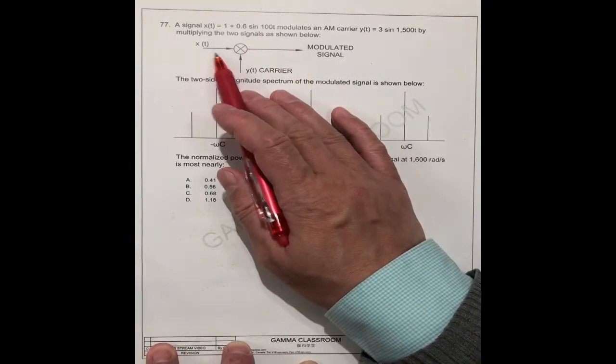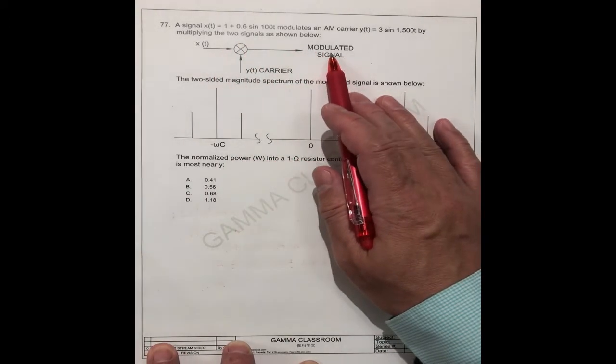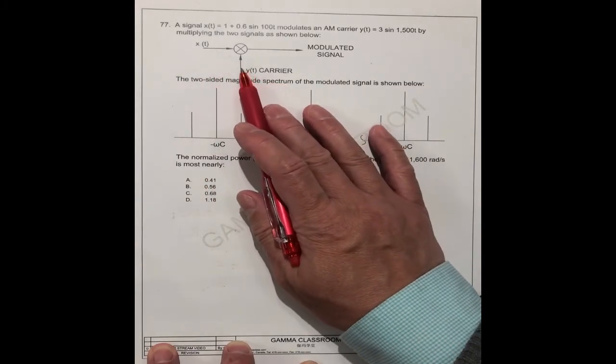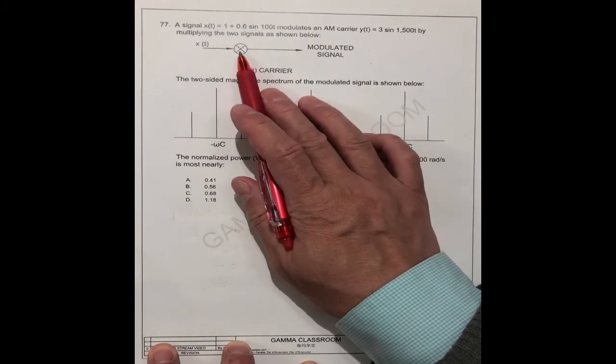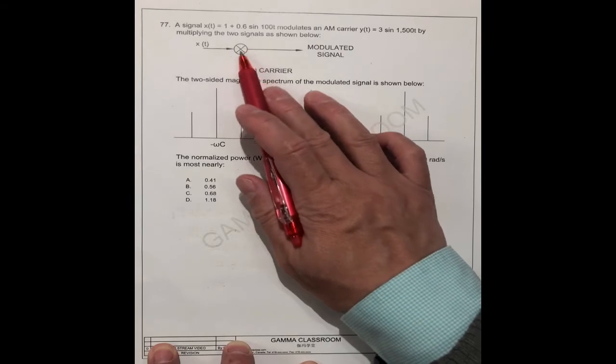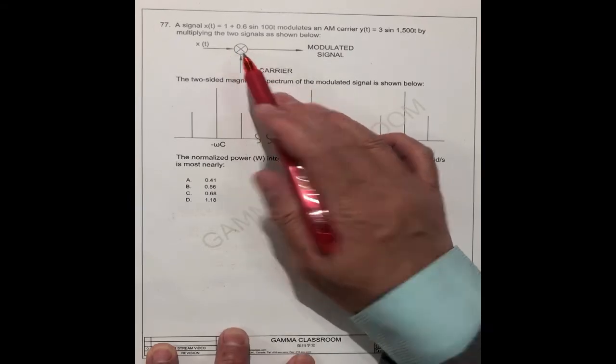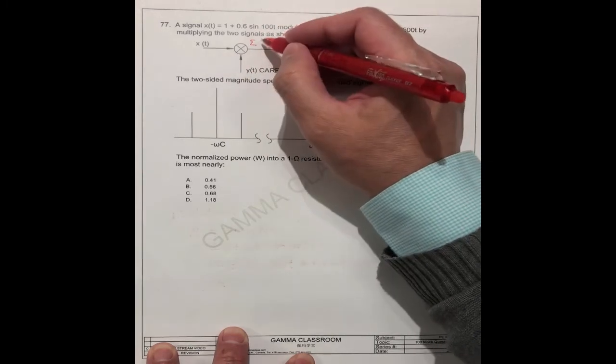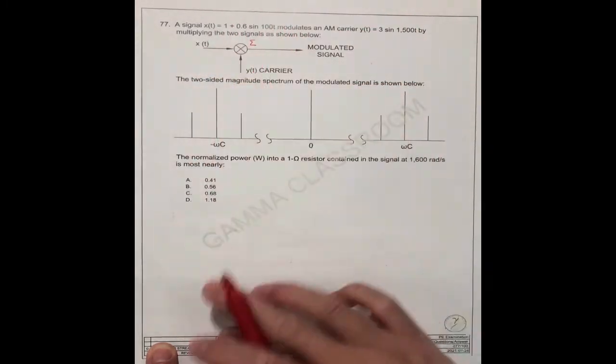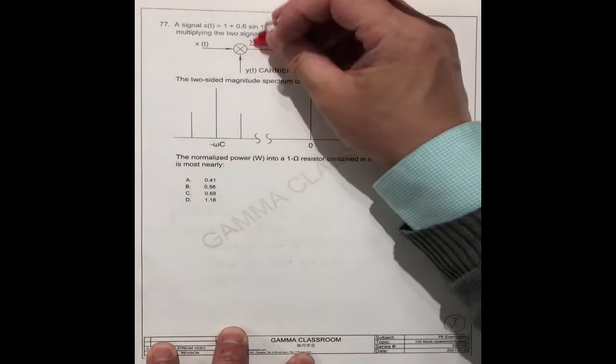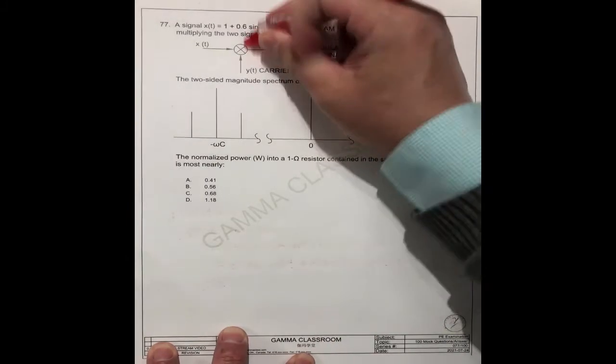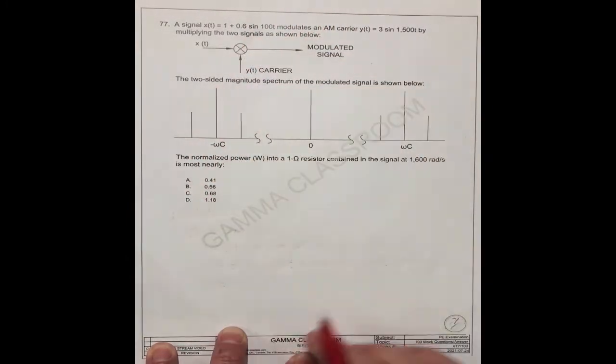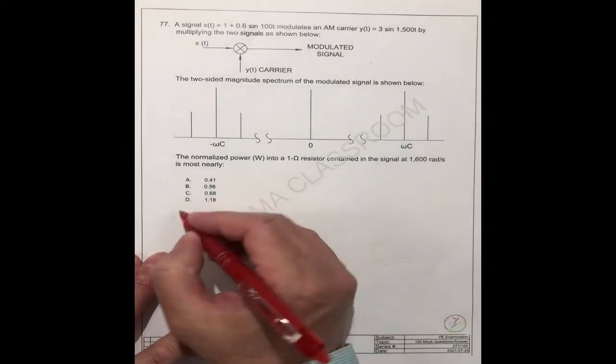So you see here, this modulated signal equals this multiply this one, because the sine sign is multiplying. If like the sigma, it's plus this one plus this one. So for this question, this is multiplied here. So for the solution...